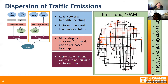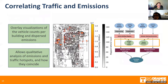Finally, we take these emissions values over the area of each building and sum them up to aggregate emissions values into per-building sums. When we take the visualizations of the vehicle counts and overlay them with the dispersed emissions, this allows us to perform a qualitative analysis of emissions and traffic hotspots, and you can see how they coincide.